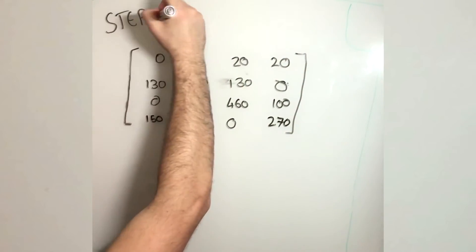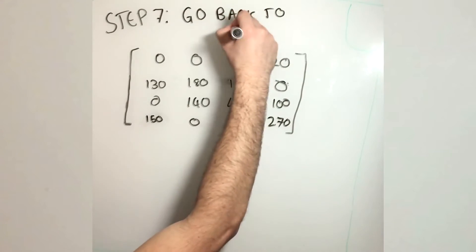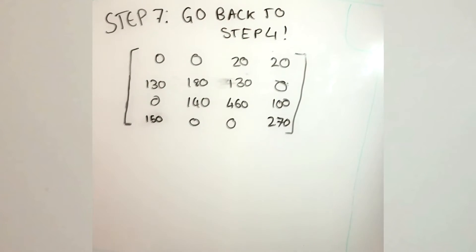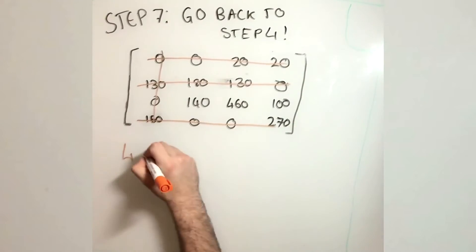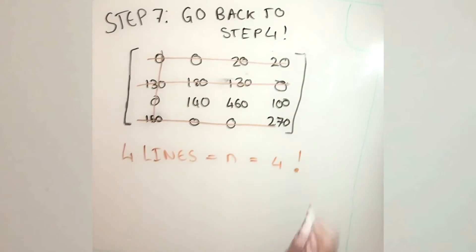The next step is the same as step 4. We need to see if we can put the same little as possible lines that can go through zeros and count the number of lines. So now we have four lines, which is equal to the number of Ns.